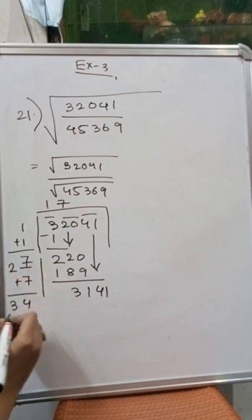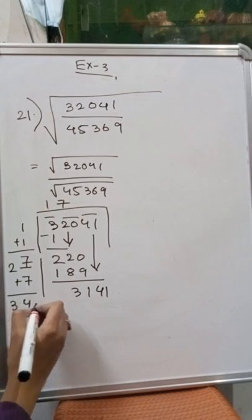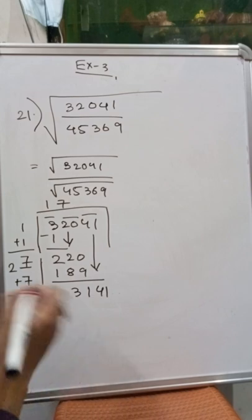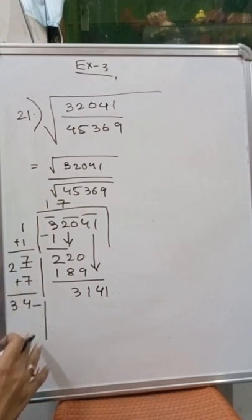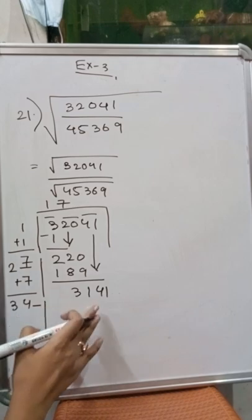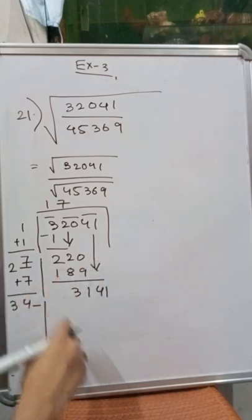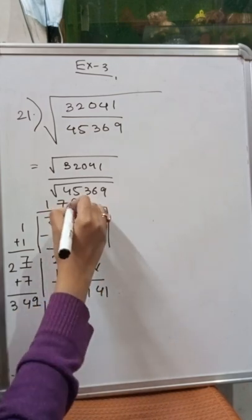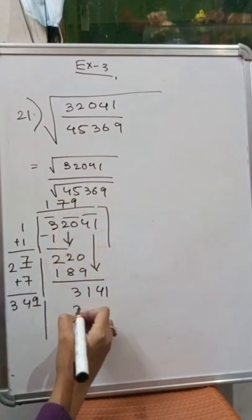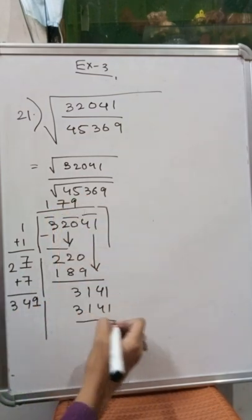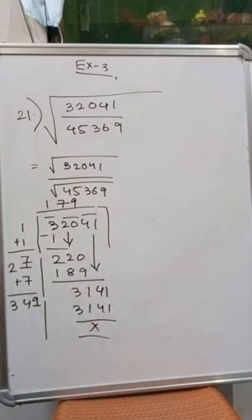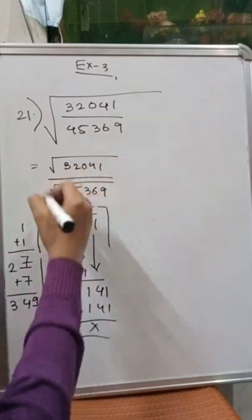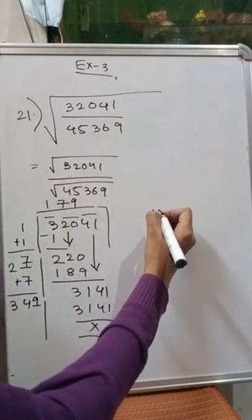So 347 plus 7 is 354, plus carry gives us 34, and we place a dash again. We have to place some number so that 3141 comes exactly or something less than 3141. If we place 9 here, exactly 3141 comes. So we have found the square root of 32041.